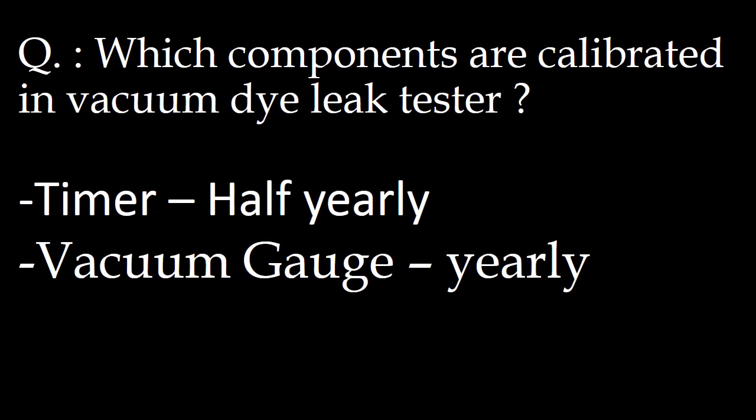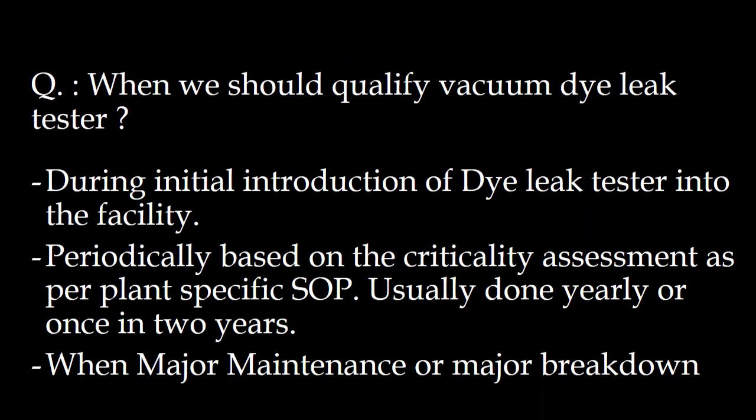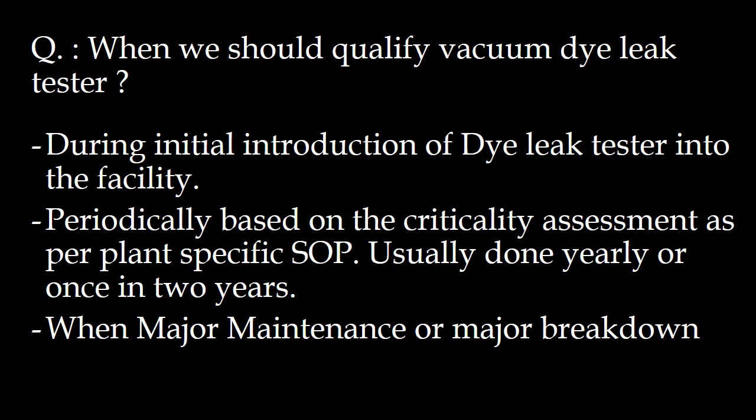Which components are calibrated in the vacuum dye leak tester? There are two components that are calibrated: first is the timer, and second is the vacuum gauge. Commonly, the timer is calibrated half-yearly and the vacuum gauge is calibrated yearly.